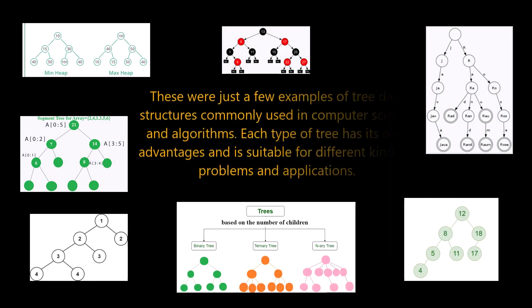These are just a few examples of tree data structures commonly used in computer science and algorithms. Each type of tree has its own advantages and is suitable for different kinds of problems and applications. This will conclude this session. Let me know if you have any questions.